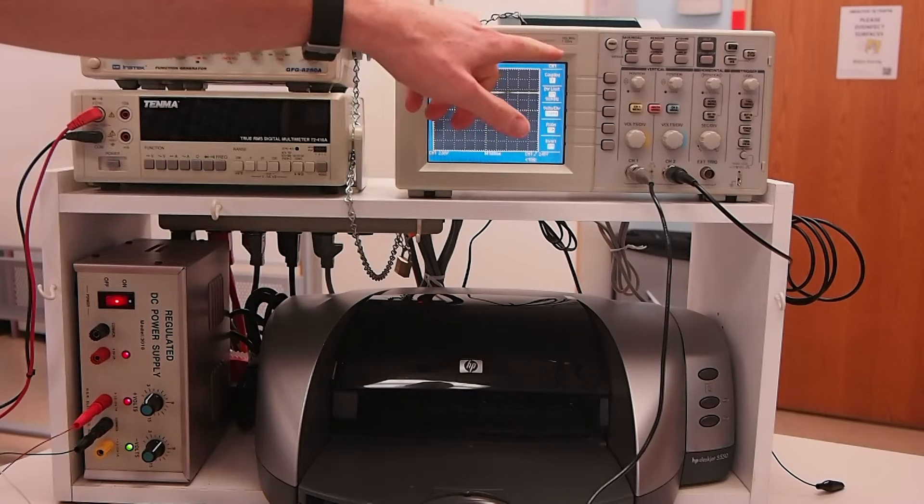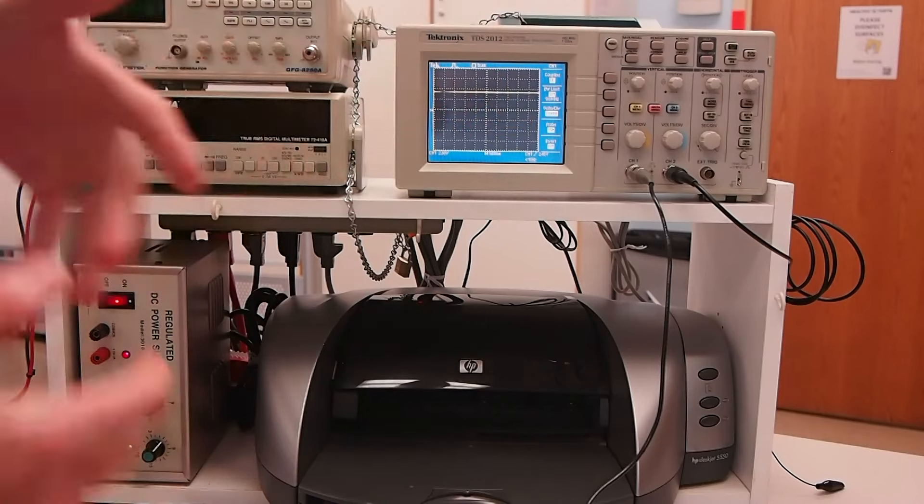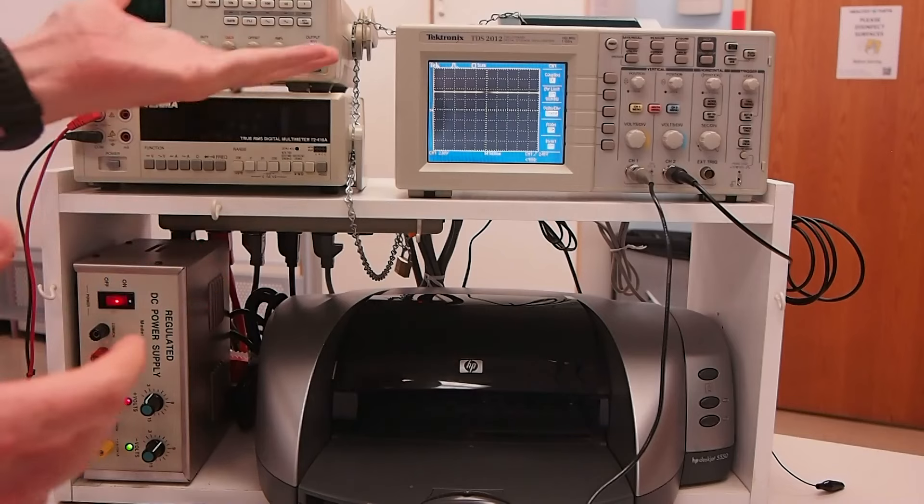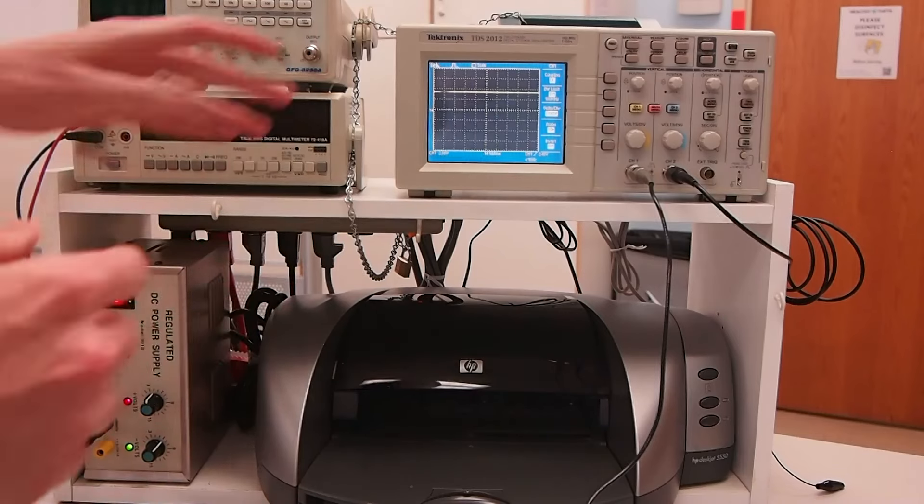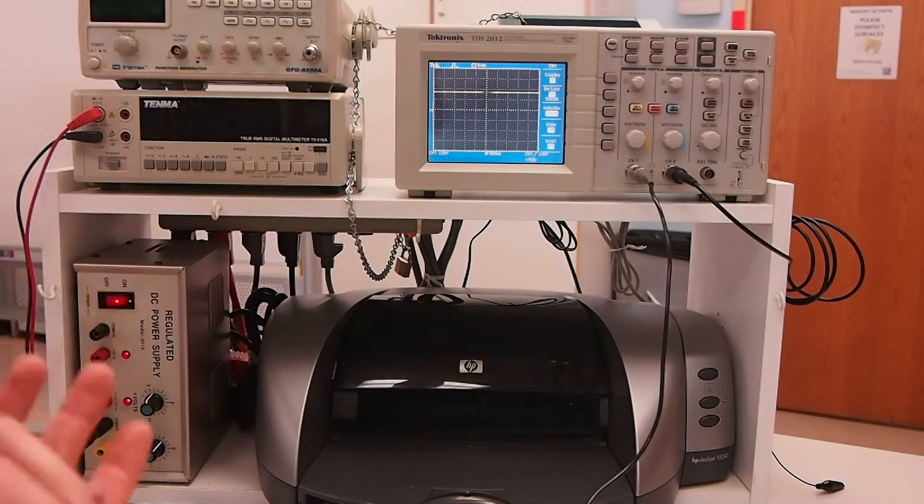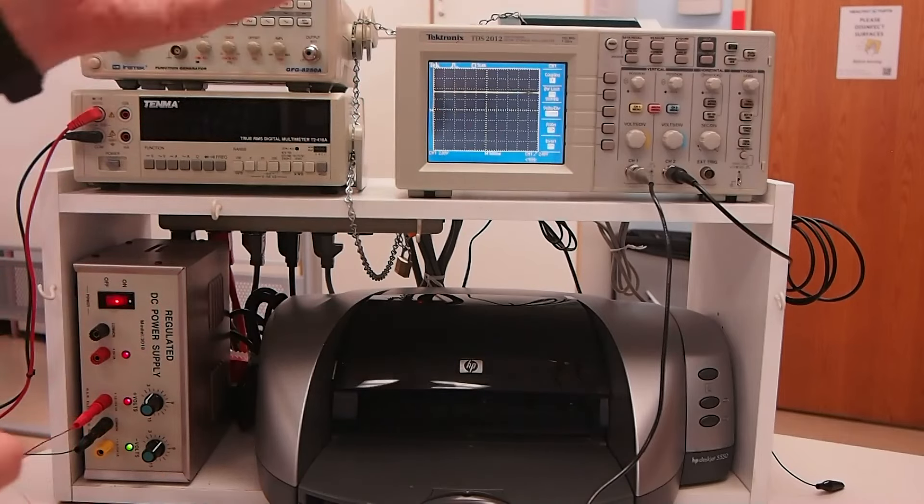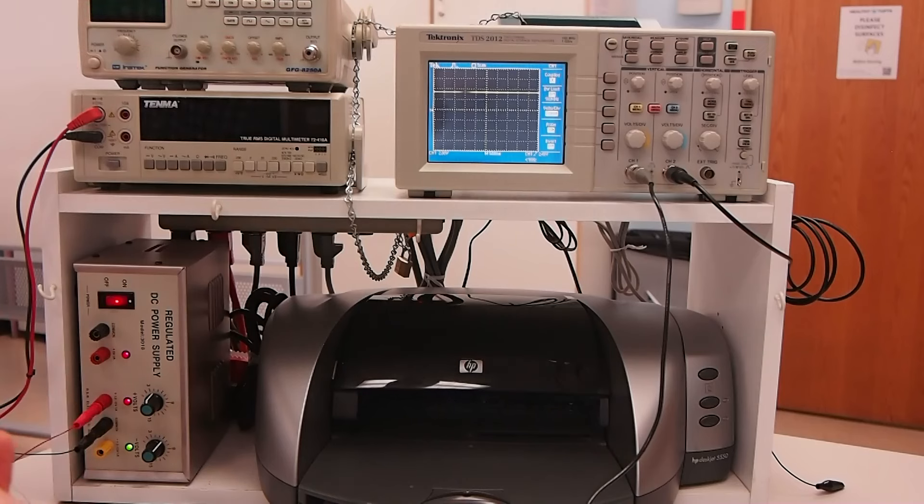In this case, this one can do 100 megahertz and samples at one gigasample per second. So taking a billion measurements of that voltage per second, and it can measure signals that are changing as fast as 100 megahertz.